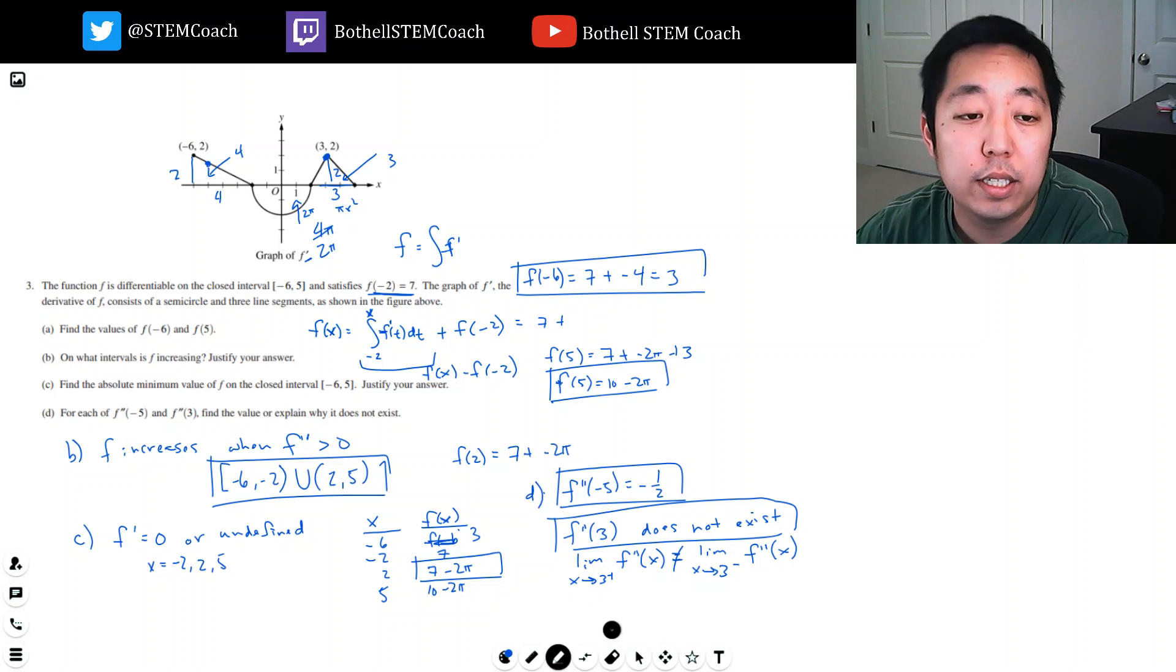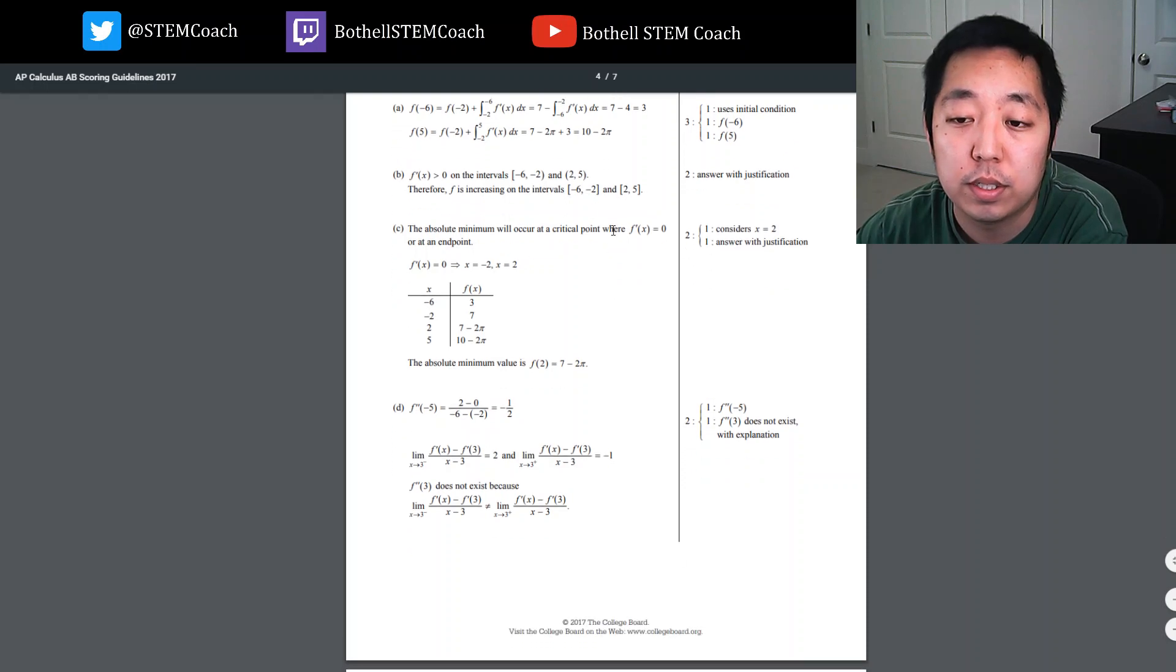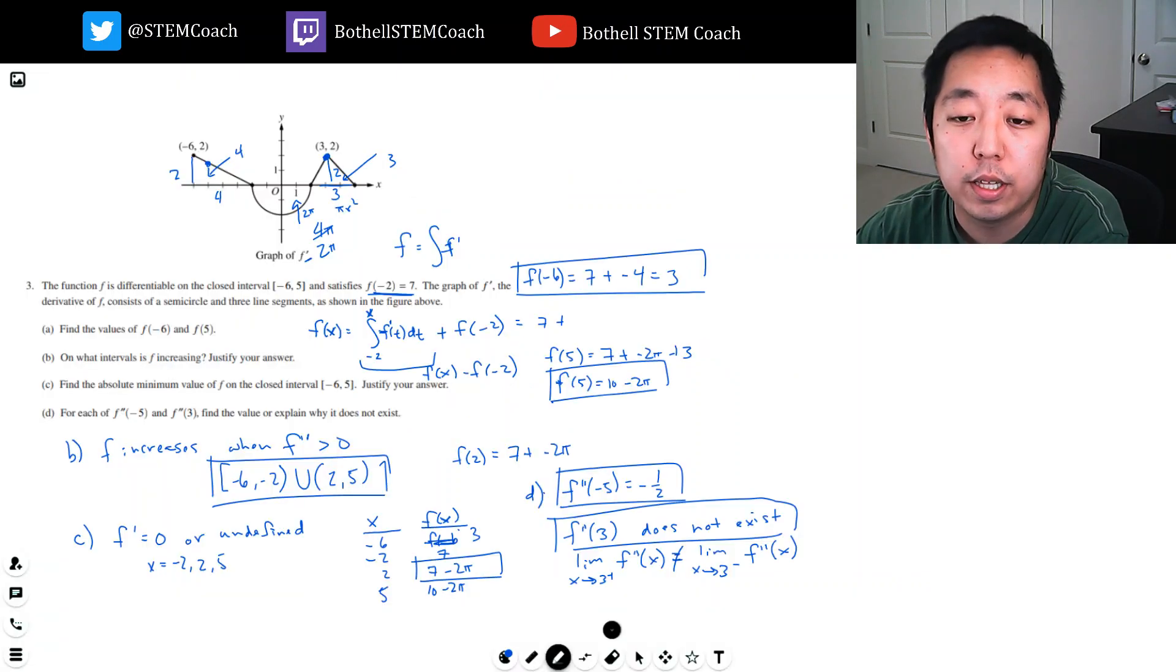So let's take a look at how the scoring guidelines worked on number three here. Three and 10 minus two pi uses the initial condition and evaluates each of these. It's increasing on these intervals. They put square brackets there. I don't know why they put square, especially when they listed it with the curve brackets there. So I don't think it matters. Clearly they were not being too super precise on this. The minimum value is that one. So I consider x equals two. That's a point for that. And then the negative one half and does not exist. So good. Got all the points on that one. So I guess I hope you guys enjoyed that video. Please leave a comment, like, or subscribe. And thanks for watching. I'll see you in the next free response when we go through number four.